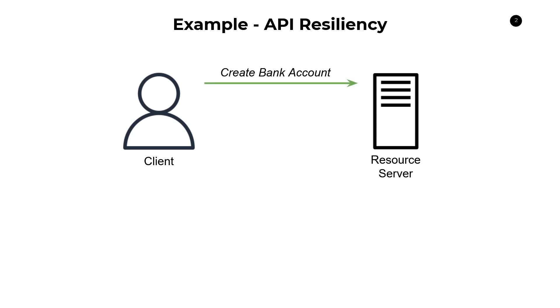Say we call this API from the client perspective. There are many things that could happen: we can get success, we can get failure, we can get a dependency issue due to the resource server, or we can get the dreaded no response — we never got anything back from the server.